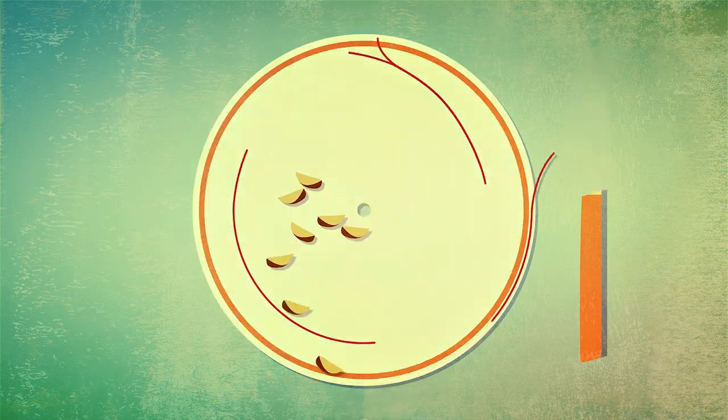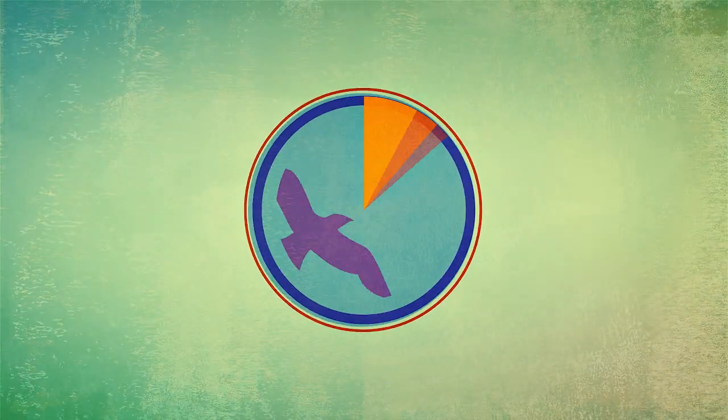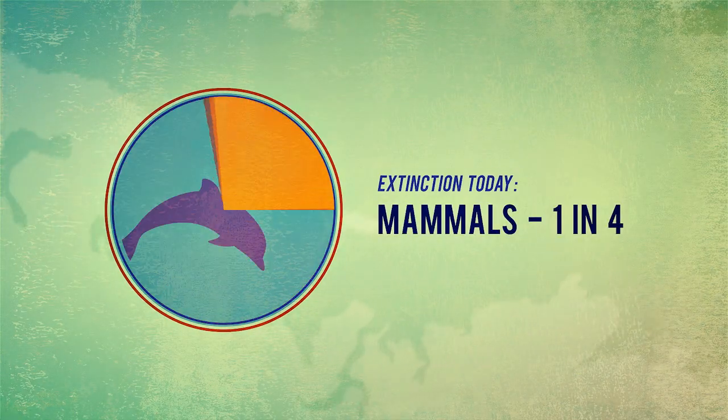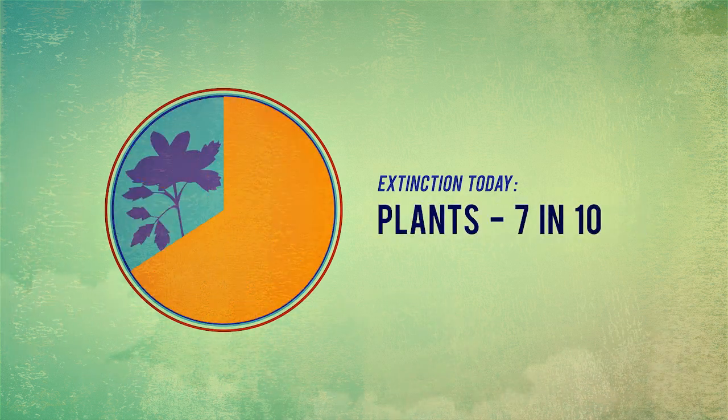Biodiversity feeds us and clothes us. The consumption patterns of people in rich countries are the principal cause of biodiversity loss. The rapid loss of Earth's species is estimated to be between 1,000 and 10,000 times higher than the natural extinction rate.